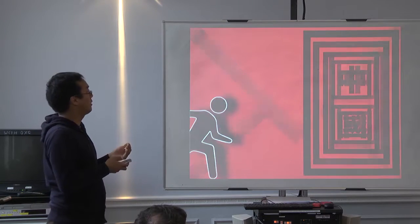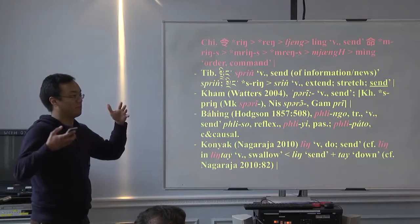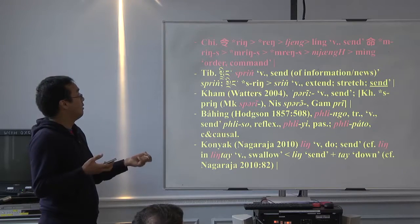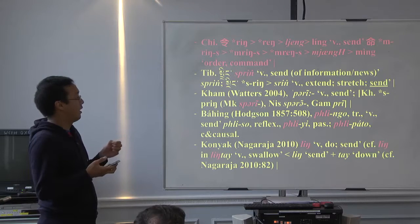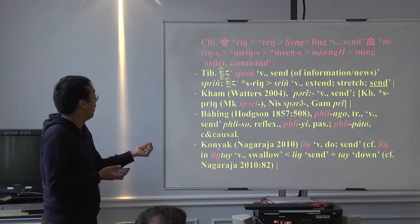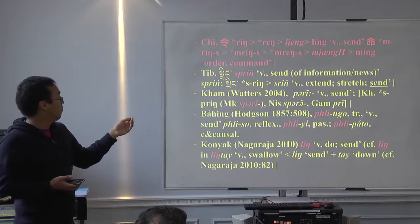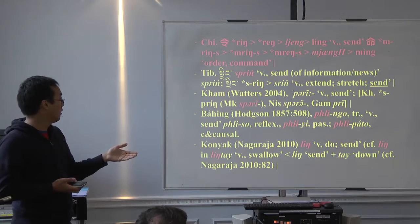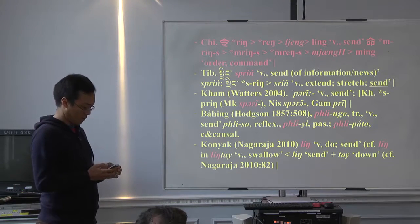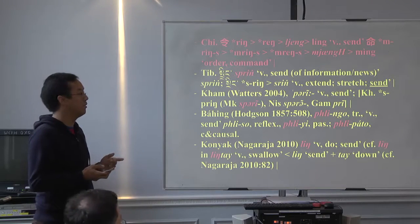This is still the comparative part, now looking at the word for 'sending.' Lingming, for example, may have tentative cognates with Tibetan 'spring,' and in the Kham direct language Sperini, and Bahi Plini, and Konyak Plini — although I'm not entirely sure about that. You can see that M and P somehow correspond to each other across these languages.